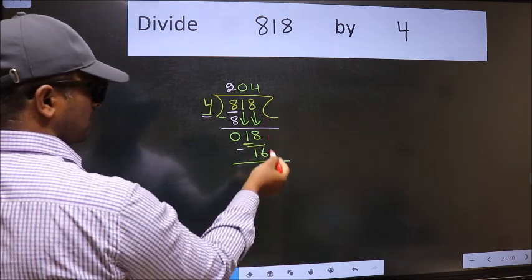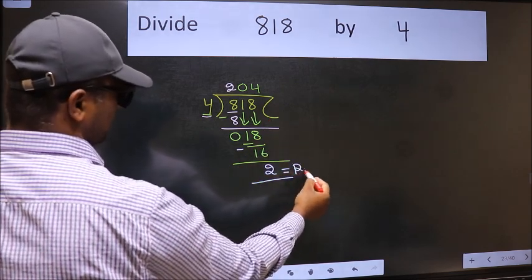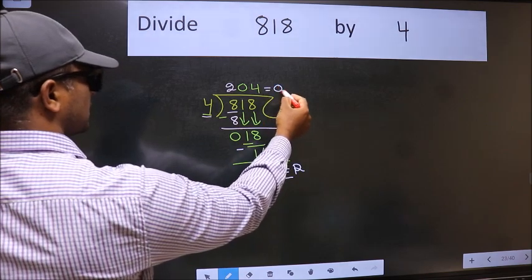No more numbers to bring it down. So we stop here. This is our remainder and this is our quotient.